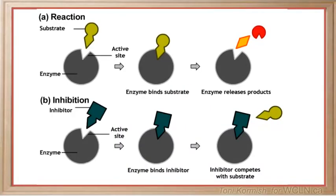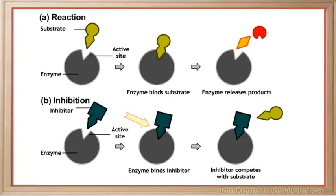A competitive inhibitor is any compound which closely resembles the chemical structure and molecular geometry of the substrate. The inhibitor competes for the same active site as the substrate molecule. The inhibitor may interact with the enzyme at the active site, but no reaction takes place. The inhibitor is stuck on the enzyme and prevents any substrate molecule from reacting with the enzyme.